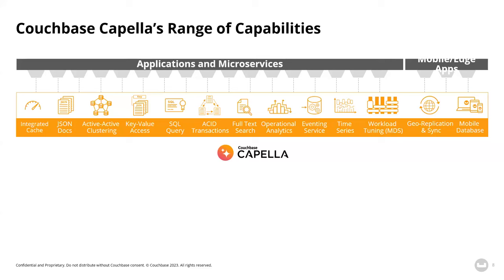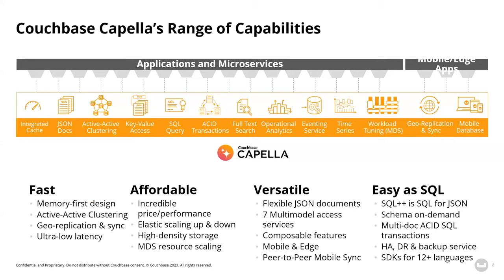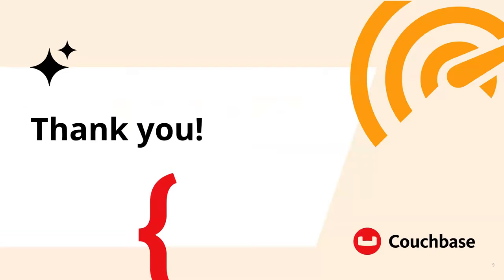To break down the benefits, we like to say FAVE: fast, affordable, versatile, and easy as SQL. And we want to be your new favorite database. So check it out at couchbase.com. Thank you very much for letting Couchbase participate in this event. I'm going to hand it back over to Shannon.